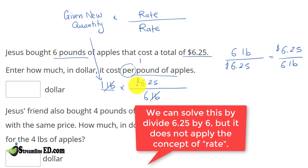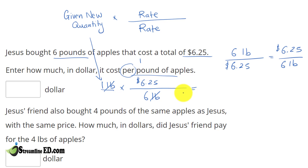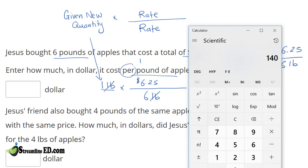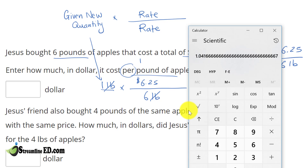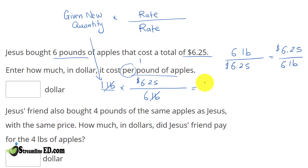See how that works? Now we just simplify the math: 1 times 6.25 divided by 6. Let's take our calculator — 1 times 6.25 divided by 6 — and this gives us 1.04. So 1 pound of apple costs $1.04.